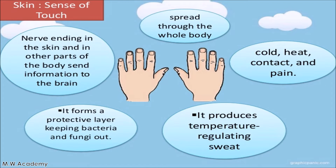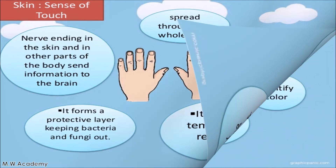So when we touch anything, we quickly know whether it is hot, cold, or has sharp edges. How do we know this? Through the sense of touch — when we touch something, our skin immediately senses it.